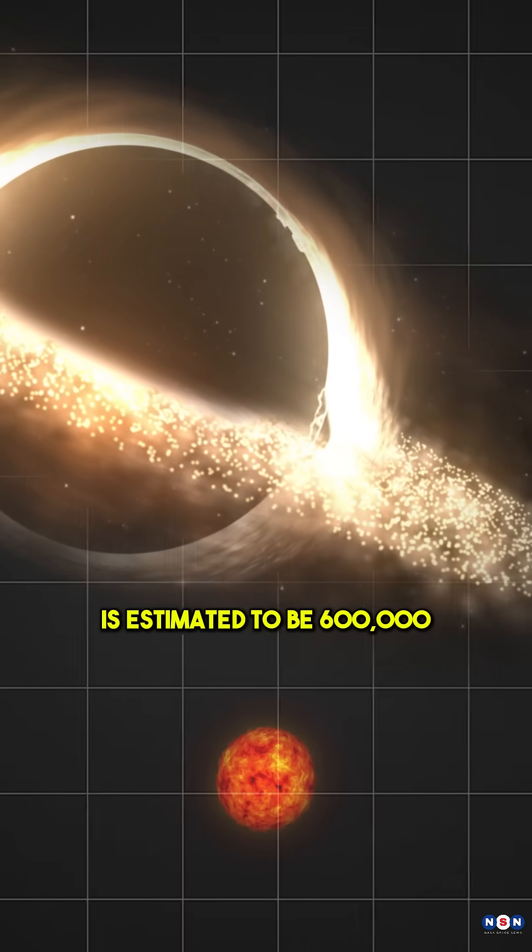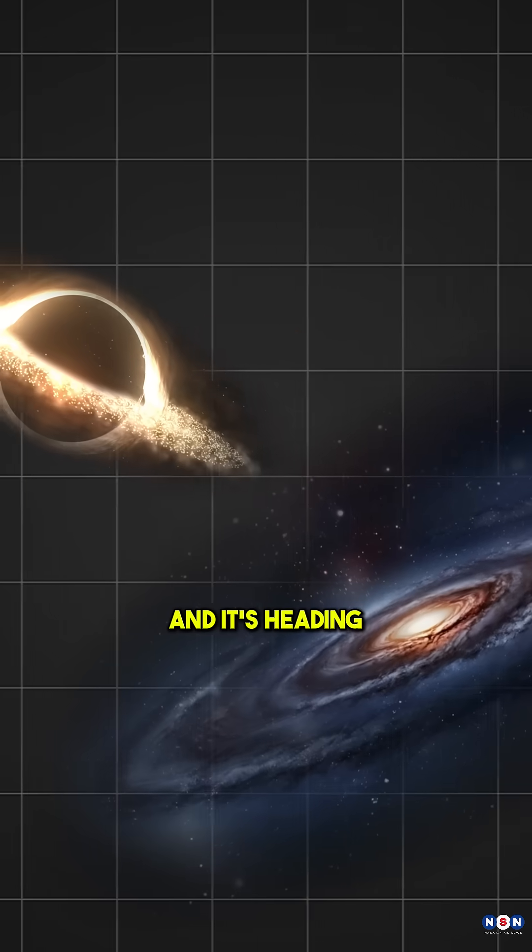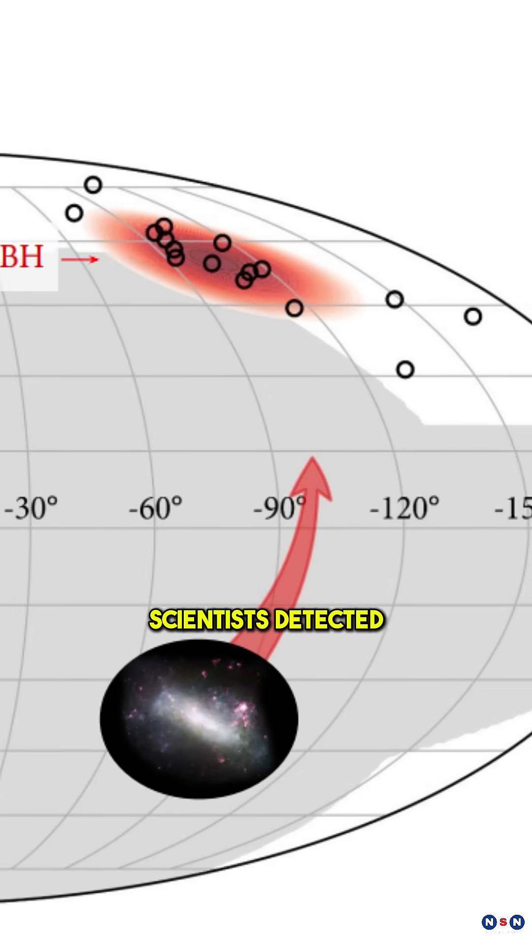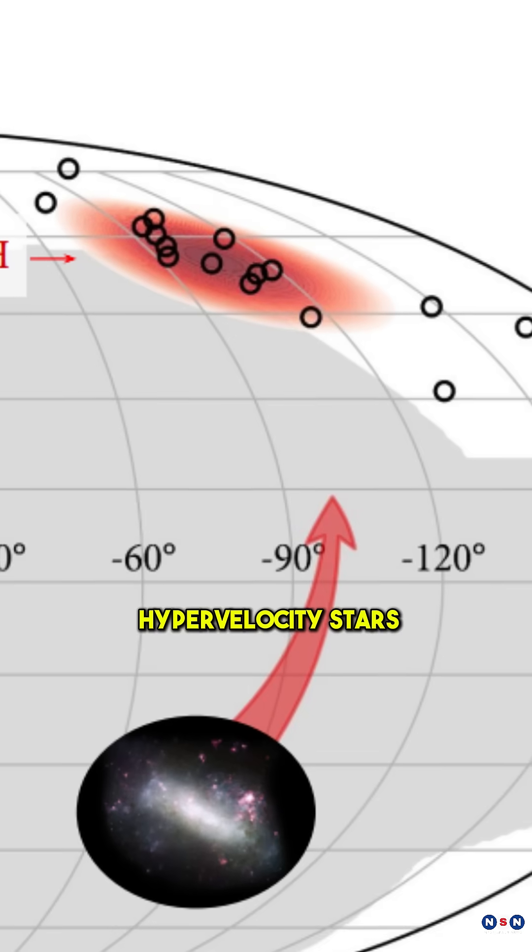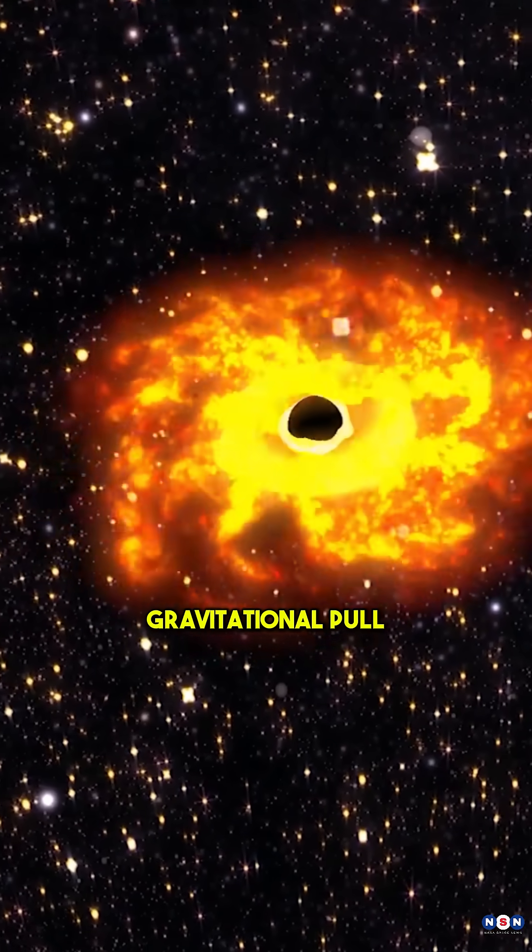This black hole is estimated to be 600,000 times the mass of the sun, and it's heading straight for us. Scientists detected its presence by tracking hypervelocity stars, fast-moving stars ejected by the black hole's powerful gravitational pull.